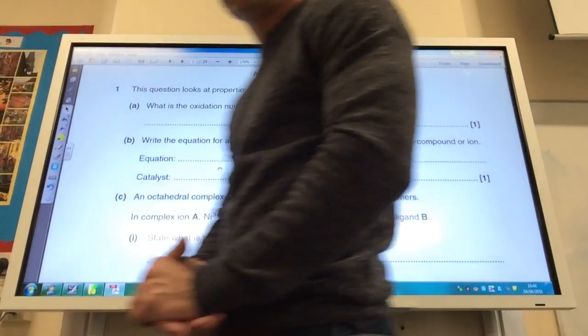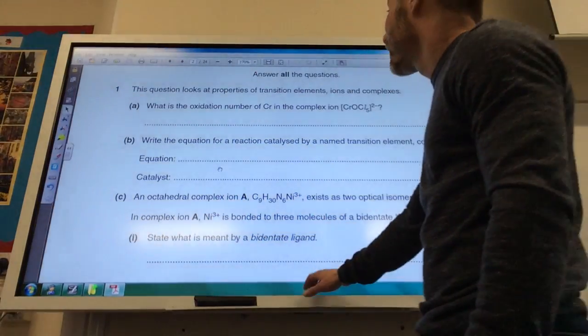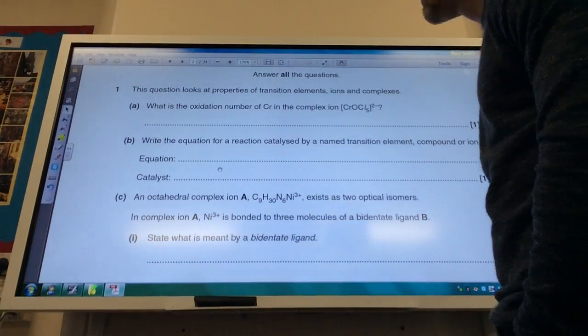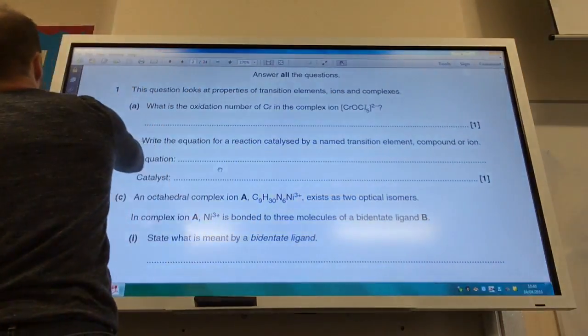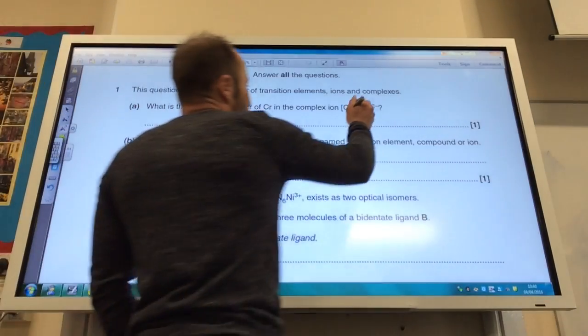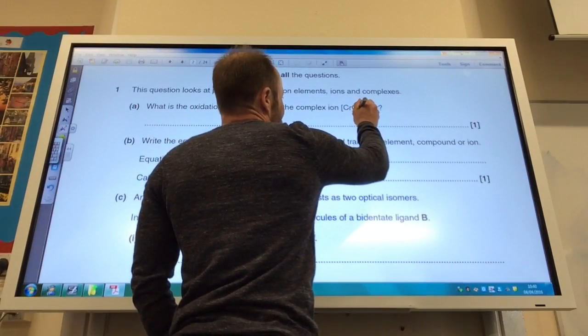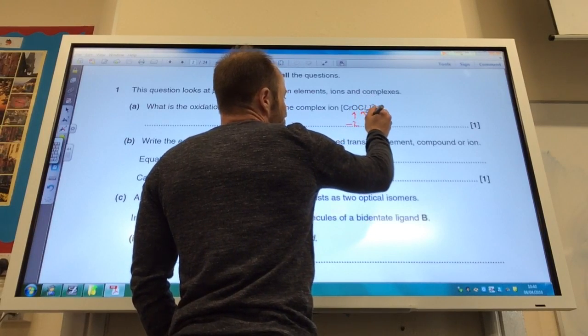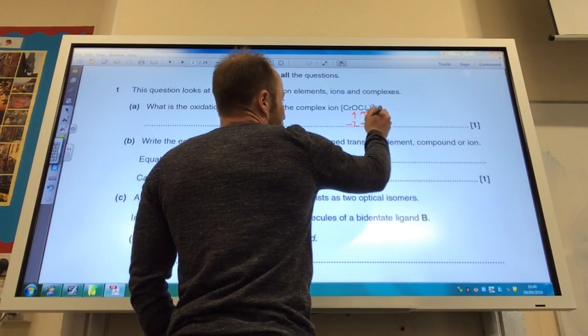So the first question is looking at the transition elements. The first thing it wants me to do is work out the oxidation number of chromium in that complex there. If we go through that, we know that oxygen is minus 2, chlorine is minus 1, but we've got 5 of that, so that is minus 5.